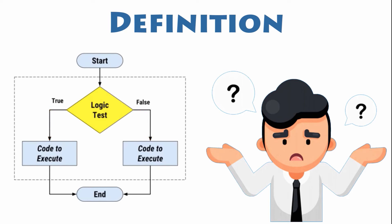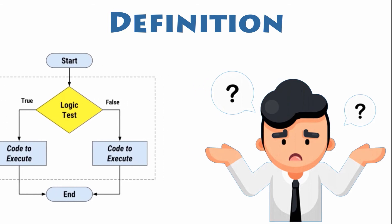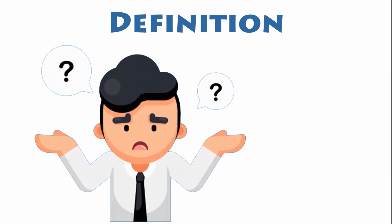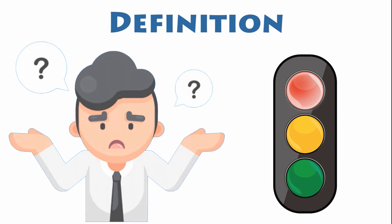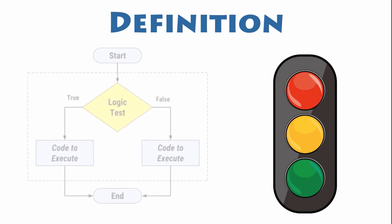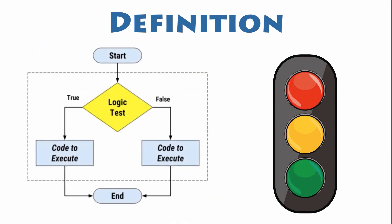In the real world, you commonly must evaluate information around you and then choose one course of action or another, based on what you observe. For instance, think of a traffic light: when it is green, you continue your drive; when you see the light turn yellow, you reduce your speed; and when it is red, you stop. These are logical decisions that depend on the value of the traffic light.